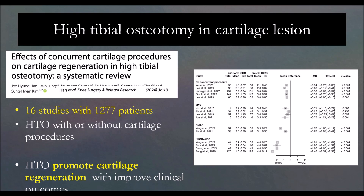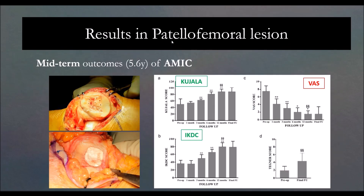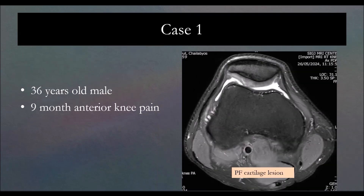In my practice, I do HTO, and if the patient has a bipolar lesion at the patellofemoral joint, I do cartilage surgery together with tibial tubercle osteotomy (TTO), which can reduce the load to the patella by 30 to 50% depending on how much you elevate the tibial tubercle.